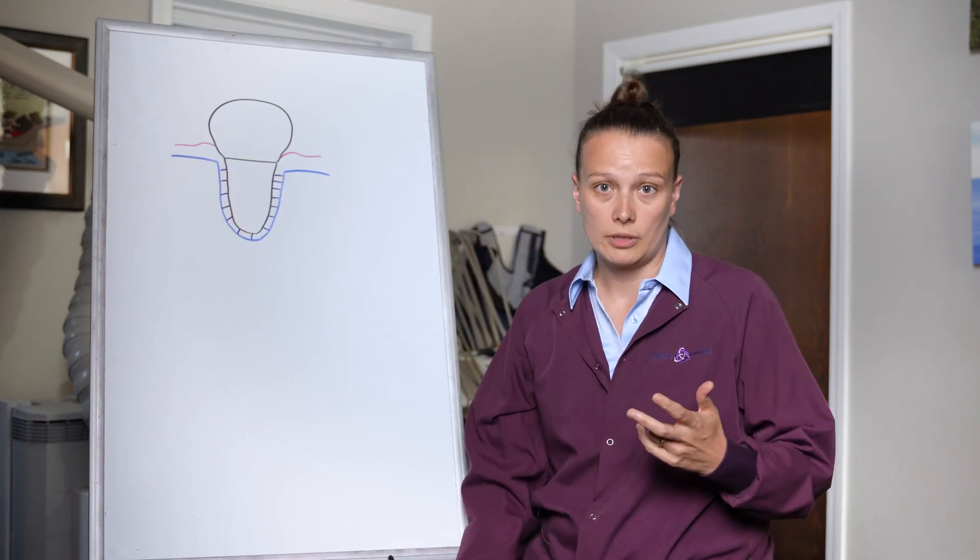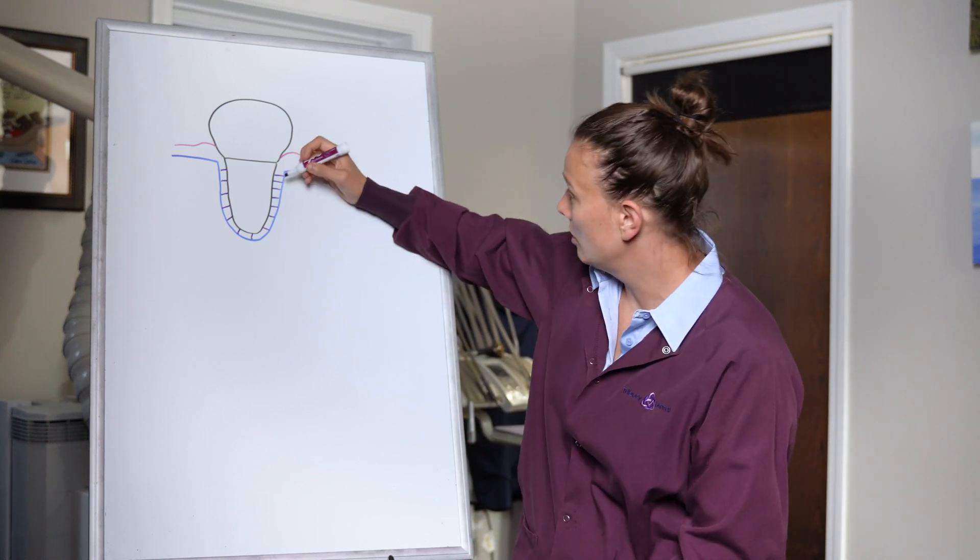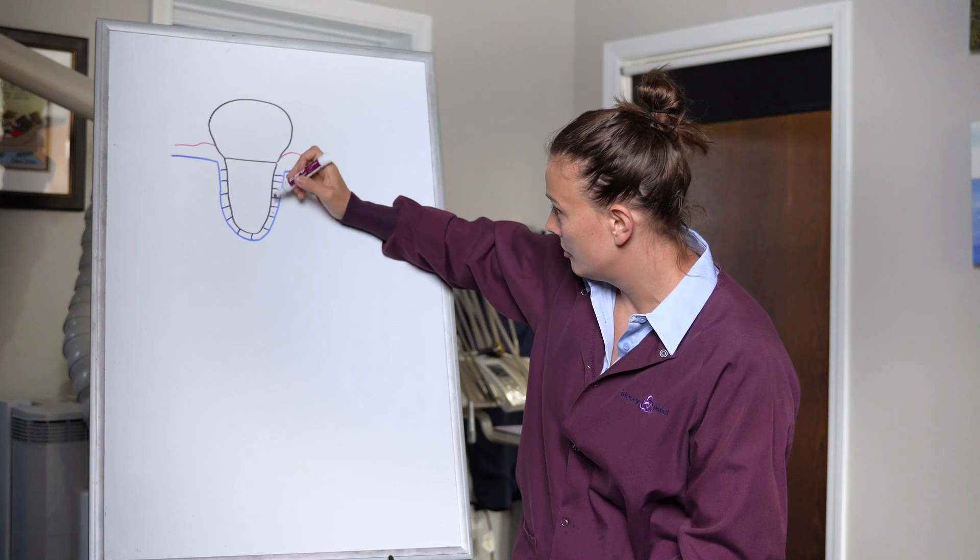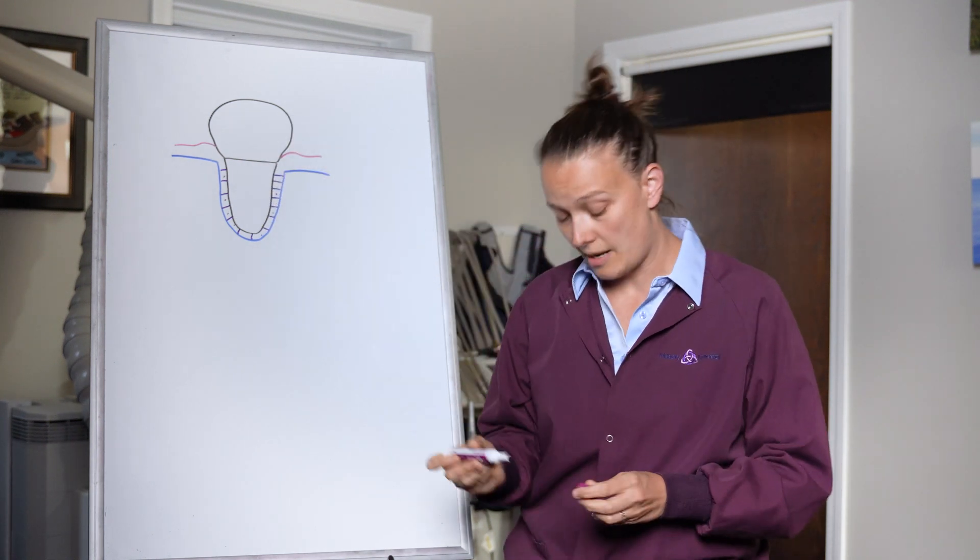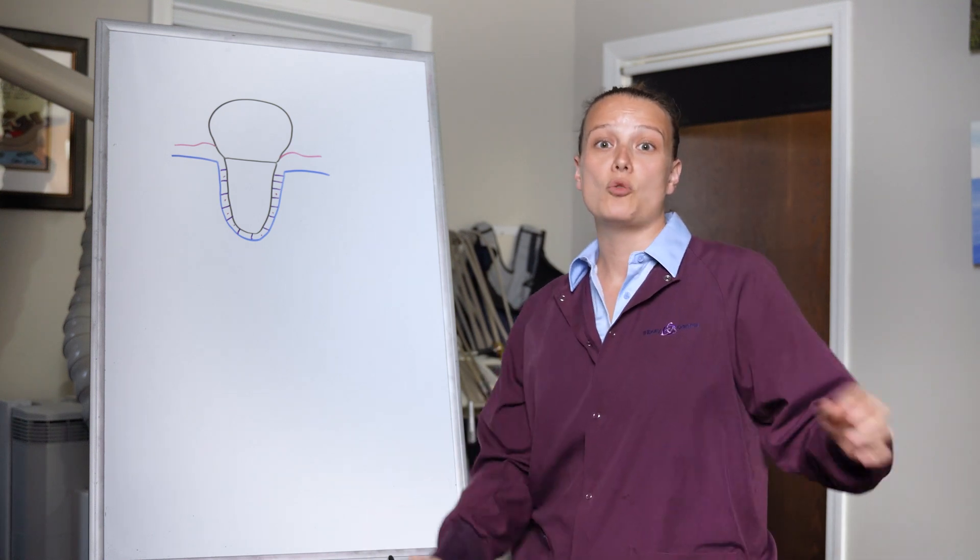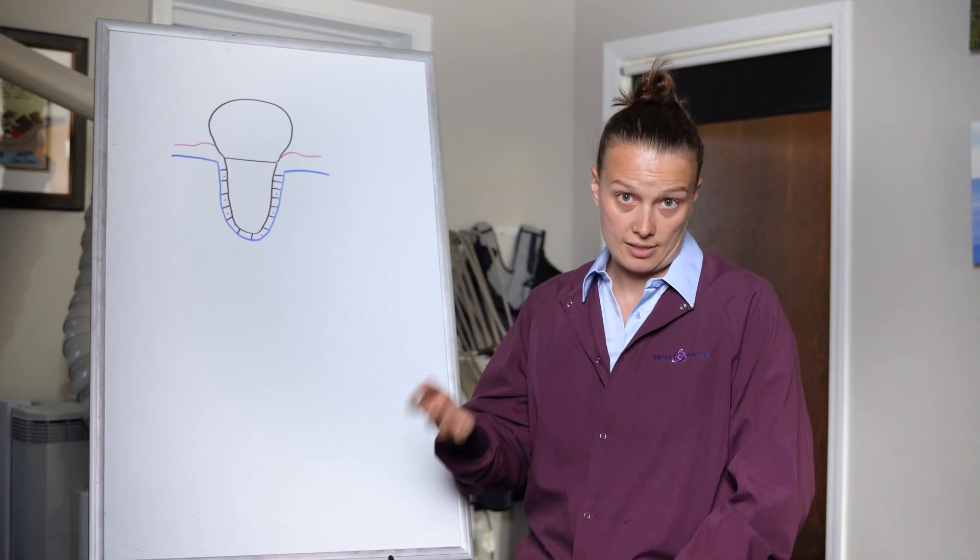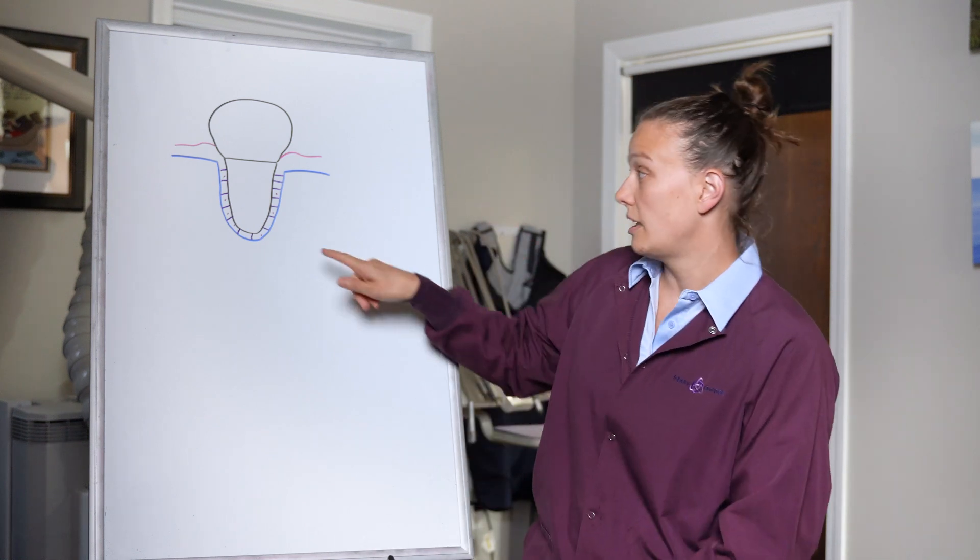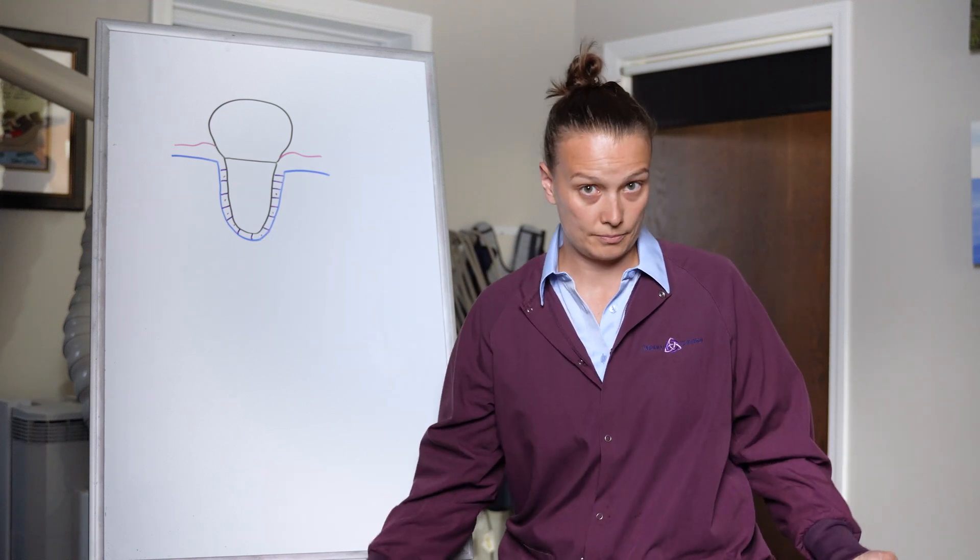What most people don't realize is that in between the beautiful periodontal ligament are these little cells. These cells are called stem cells. Stem cells are the universal cell that can become anything you want, which is great. So what we have been able to find in dentistry is that if we can stimulate these stem cells, it will actually cause growth.